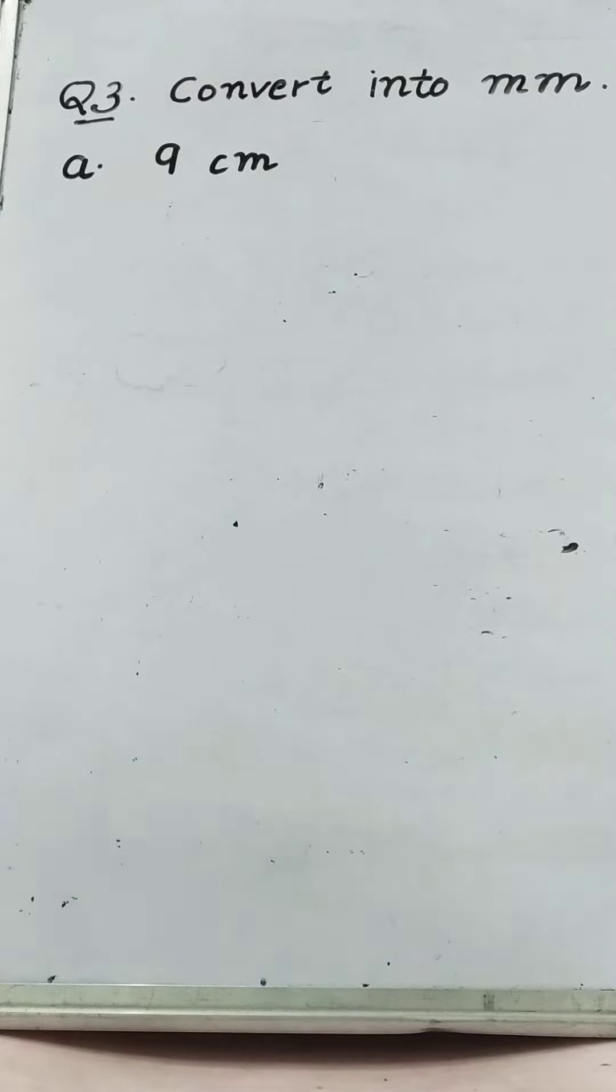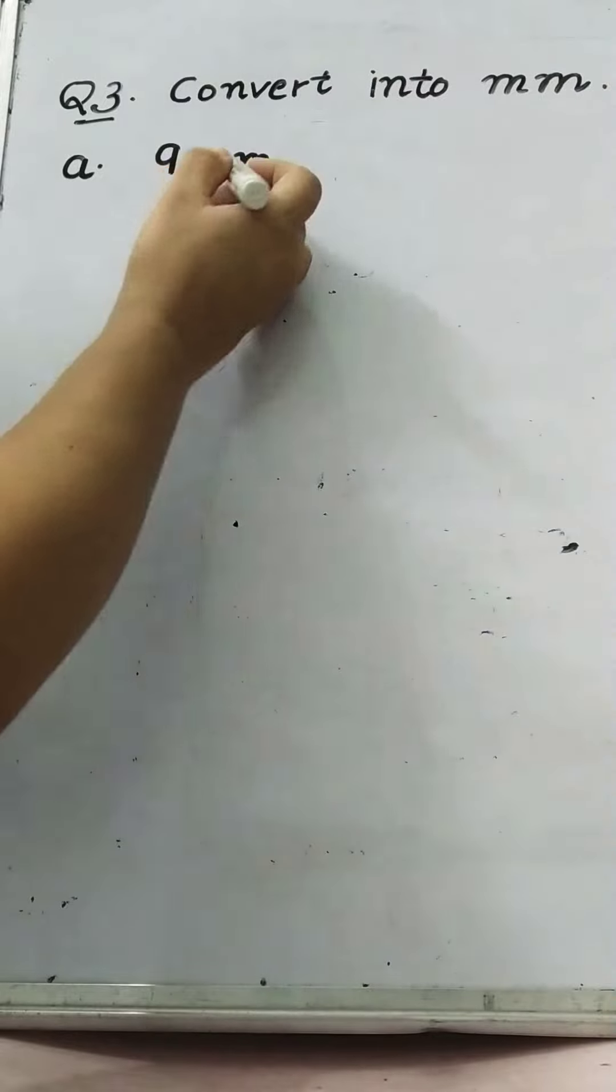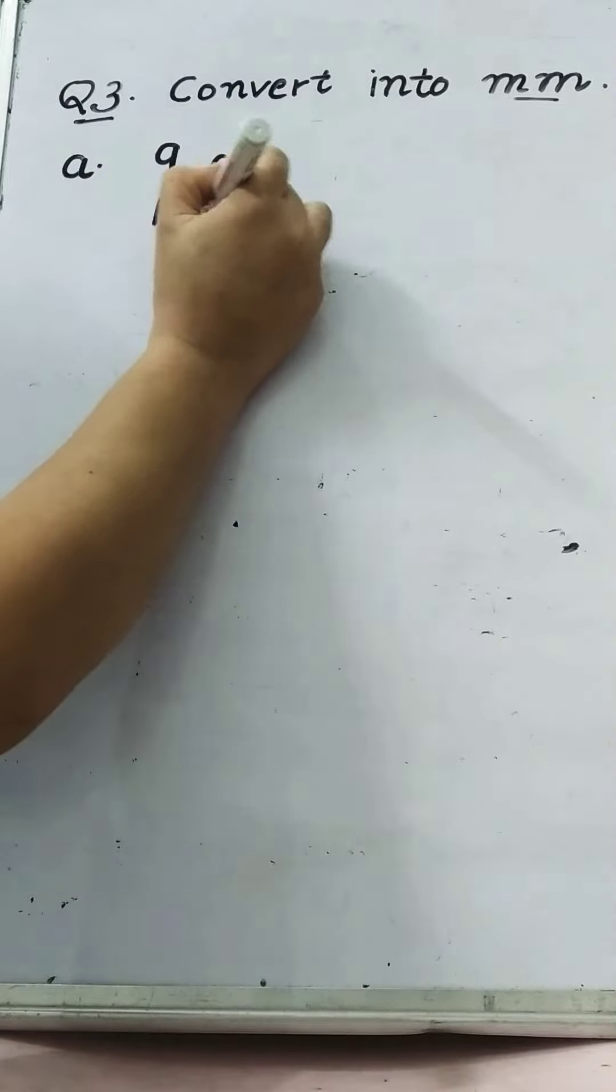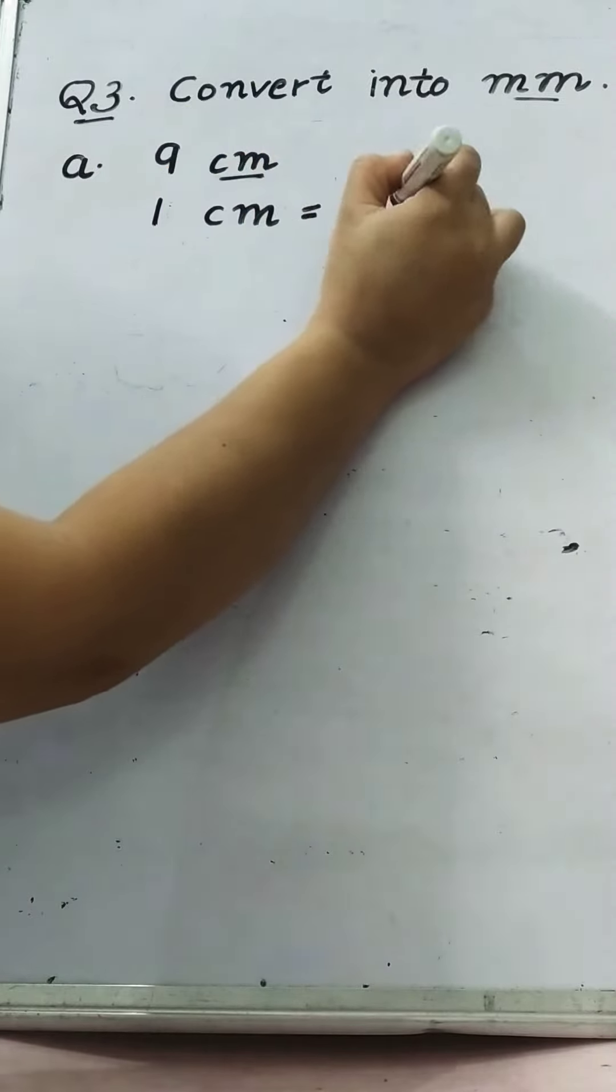Now next question is convert into millimeter. Part a is 9 cm. We will remember what is the relation between centimeter and millimeter. So 1 cm is equal to 10 mm.